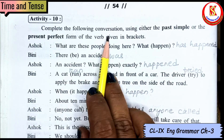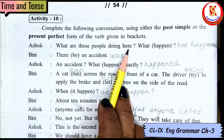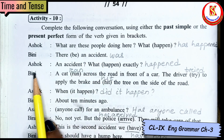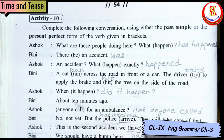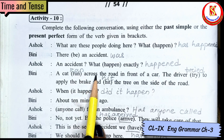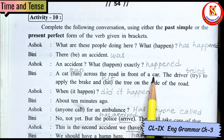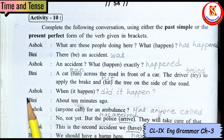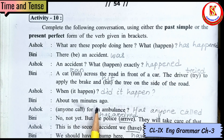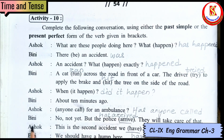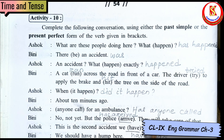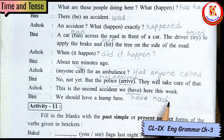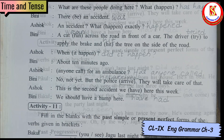Activity 10: Complete the conversation using past simple or present perfect. Vinny: 'There was an accident.' Asok: 'An accident? What happened exactly?' Vinny: 'A cat ran across the road in front of a car. The driver tried to apply the brake and hit the tree on the side of the road.' Asok: 'When did it happen?' Vinny: 'About 10 minutes ago.' Asok: 'Has anyone called for an ambulance?' Vinny: 'No, not yet. But the police has arrived. They will take care of that.' Asok: 'This is the second accident we have had here this week.' Vinny: 'We should have a hump here.'